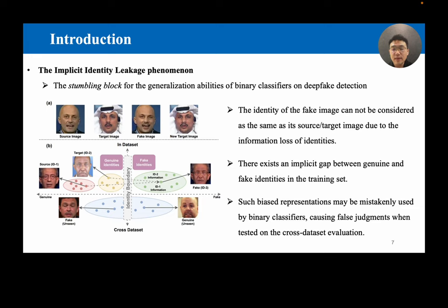In this paper, we find that the stumbling block for their generalization abilities is caused by the mistakenly learned identity representation on images. As shown in Figure 8, due to the information loss of ID representations when synthesizing deepfakes, the identity of the fake image cannot be considered as the same as its target or source image. In particular, when the face of the target image is swapped back with the face of the fake image, it is noticeable that the identity of the new target image is altered. In this way, as shown in Figure B, there exists an implicit gap between genuine and fake identities in the training set, which is unintentionally captured by binary classifiers. Such biased representations may be mistakenly used by binary classifiers, causing false judgments when tested on a cross-dataset evaluation.